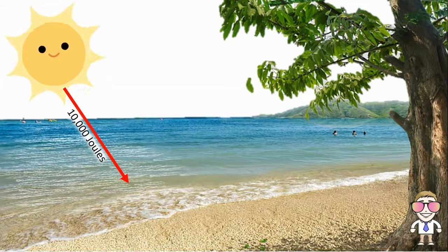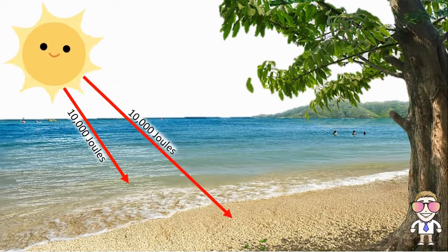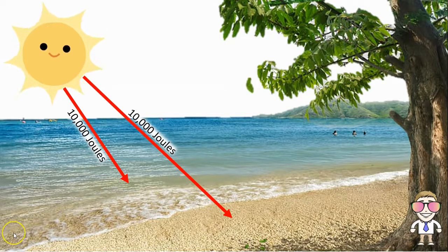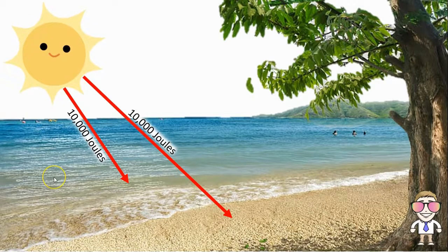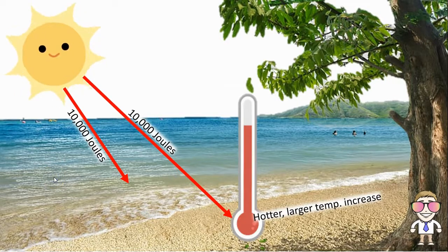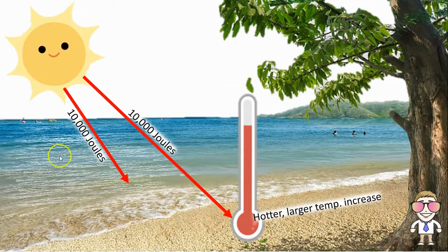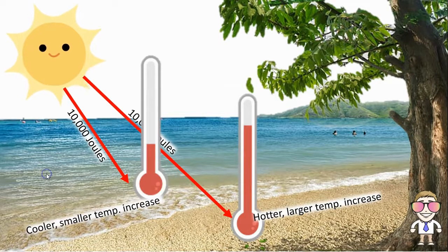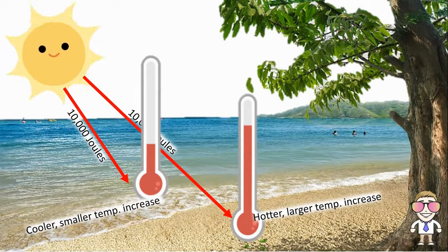Let's say the sun transfers 10,000 joules to the water and in that same quantity of time it transfers the same 10,000 joules to the sand. The weird part is that even though the same amount of heat was added to both the water and the sand, there are very different temperature changes that we observe. The sand gets much, much hotter with a larger temperature increase, while the water stays much cooler and has a much smaller temperature increase.